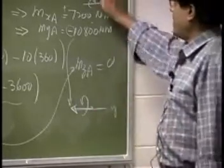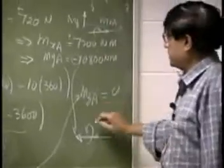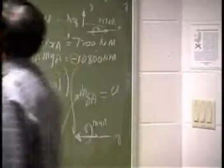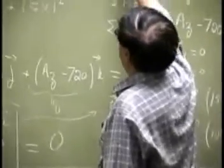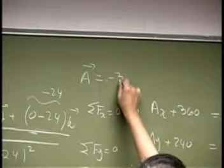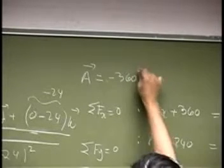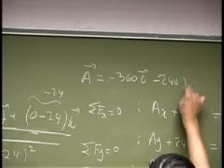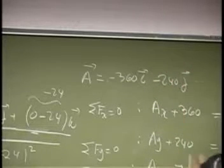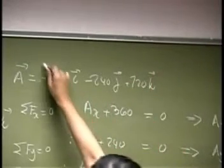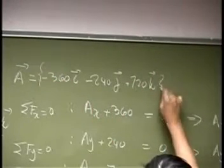And it should go like this. So that is M_XA plus M_YA. Then the actual vectors. You are looking at force A. Then force A is going to be negative 360 of I, negative 240 of J plus 720 of K. All in Newton.